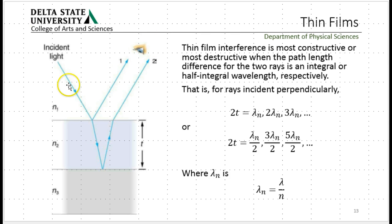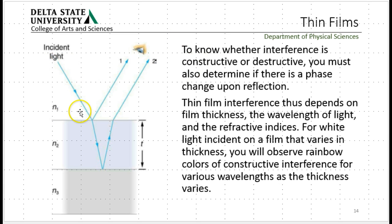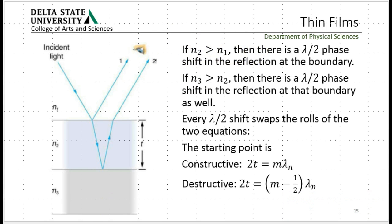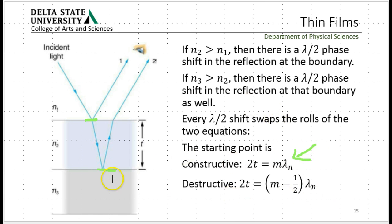But all of that depends on exactly whether N1 is greater than N2, or N2 is greater than N3, or vice versa. As you go through it all, it depends on the film thickness, the wavelength of light, and the refractive indices. All of that sets up what your actual interference is, whether it's constructive or destructive. So if we have N2 greater than N1, then there is a lambda over 2 phase shift right here, which means we need a half-integral here to get constructive interference. However, if we have N3 greater than N2, that means there's another half-wavelength phase shift here, which puts us back in — we need N lambda in order to get constructive interference.